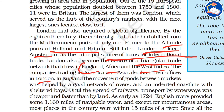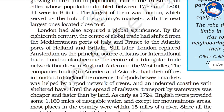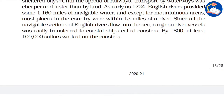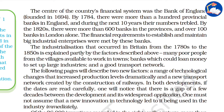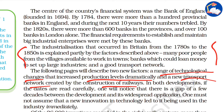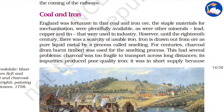In England, the movement of goods between markets was supported by a good network of roads, railway lines, and waterways. Industrialization occurred in Britain from the 1780s to the 1850s, explained partly by two key factors: a range of technological changes that dramatically increased production levels, and a new transportation network created by the construction of railways. Both developments had a gap of a few decades between them.